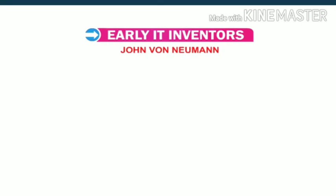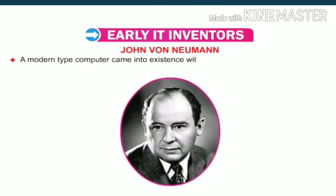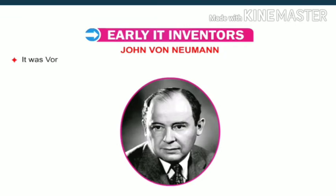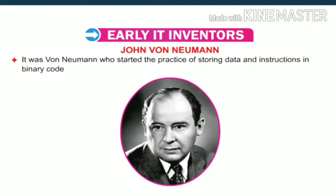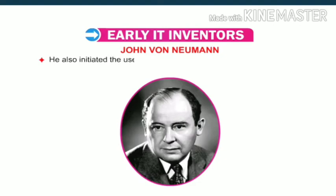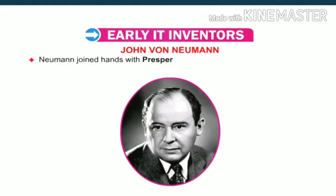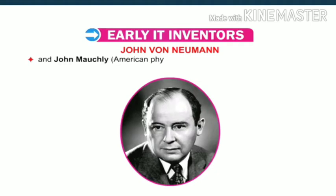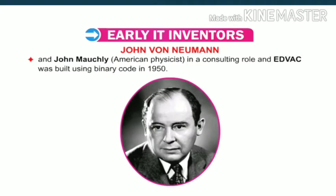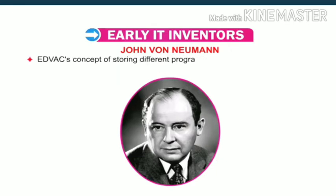A modern type computer came into existence with John Von Neumann's development of software written in binary code. It was Von Neumann who started the practice of storing data and instructions in binary code in memory, and he also initiated the use of memory to store data as well as programs. Neumann joined hands with Presper Eckert, an American electrical engineer, and John Mauchly, an American physicist, in a consulting role. EDVAC was built using binary code in 1950, and its concept of storing different programs on punched cards led to the advancement of computers that we know today.